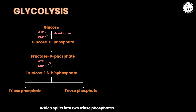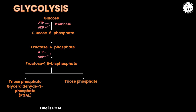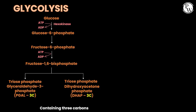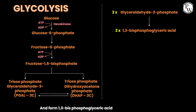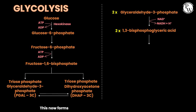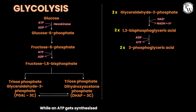Fructose-1,6-bisphosphate splits into two triose phosphates: one is PGAL, the other is DHAP. They are both isomers containing three carbons. DHAP converts to PGAL; both PGAL molecules get phosphorylated, forming 1,3-bisphosphoglyceric acid, while NAD+ forms NADH and H+. This then forms 3-phosphoglyceric acid, while an ATP gets synthesized — that's glycolysis.